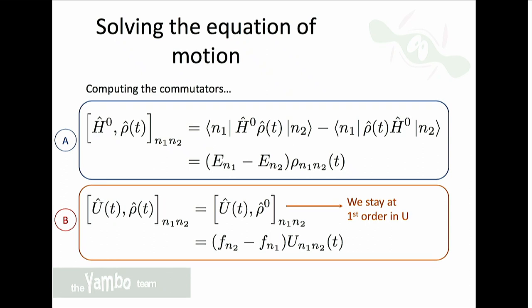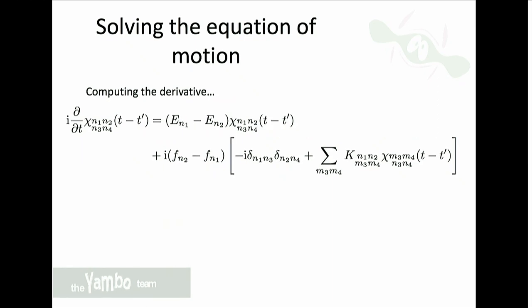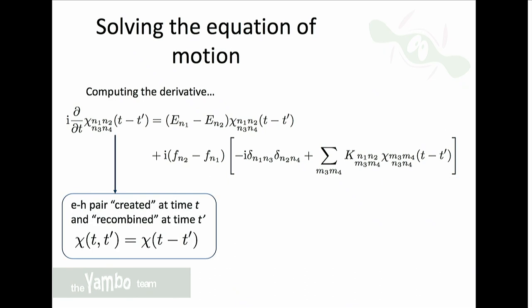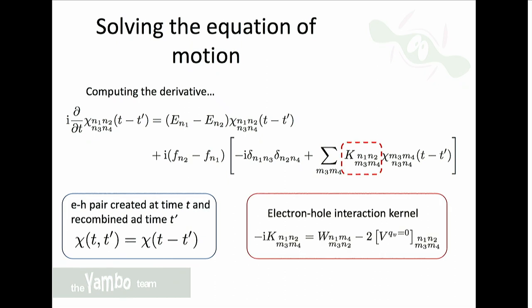In a semiconductor at zero temperature this is basically one or minus one. The third term — the large one — follows analogously, and after performing the derivative with respect to the external potential we obtain the equation. The response function depends only on the difference of the two times: the time when the electron-hole pair is created and the time when it recombines back to the ground state. The kernel K is just W minus V.